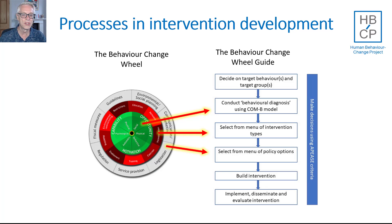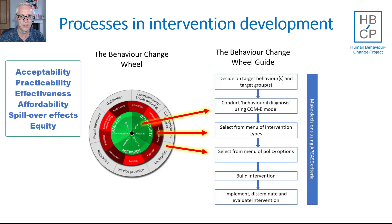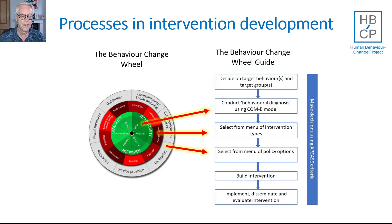All of the decision making throughout this process in the Behaviour Change Wheel guide uses a set of criteria called the APPEASE criteria. The acronym APPEASE stands for: Acceptability to key stakeholders, Practicability, Effectiveness in terms of achieving your overall objectives, Affordability, Spillover effects — which could be unwanted or positive side effects — and Equity, the extent to which what you're planning increases or decreases inequalities. These criteria should be applied to any of the decisions you make throughout that process.